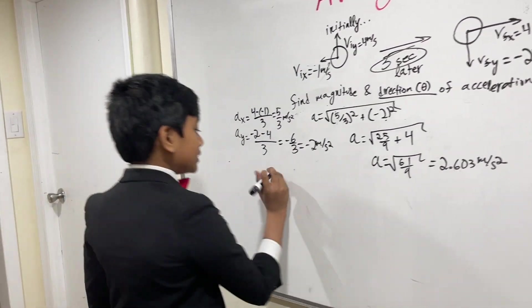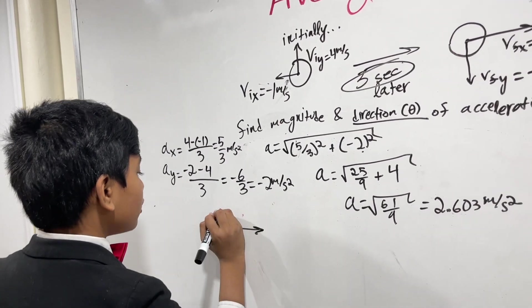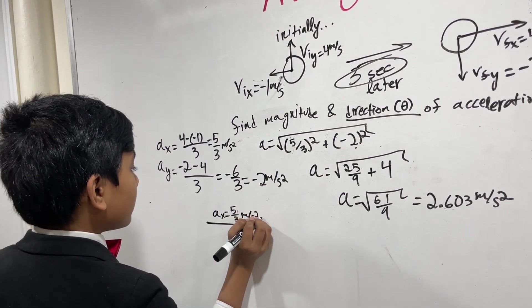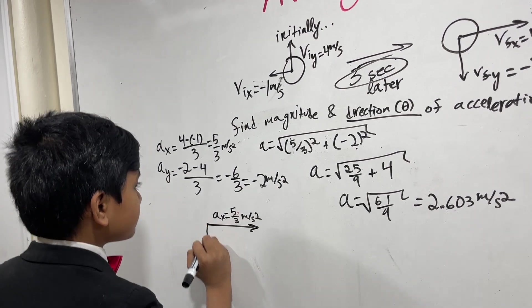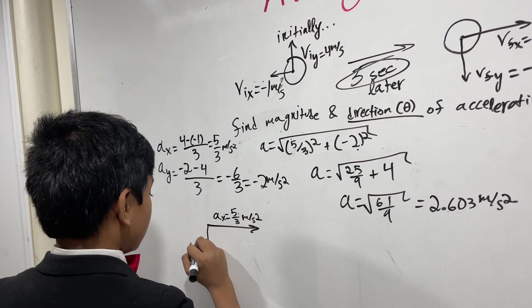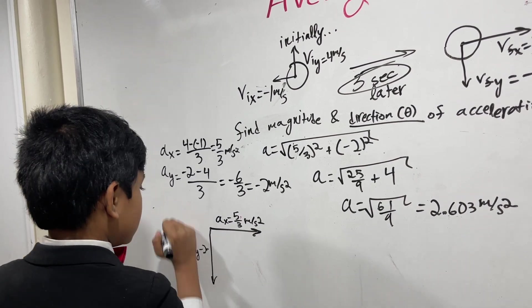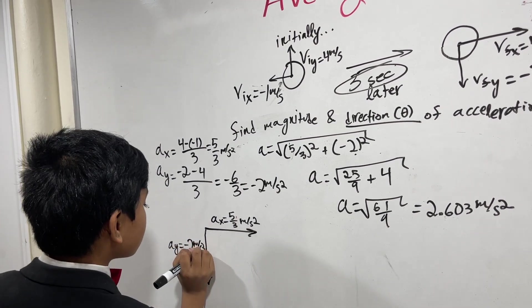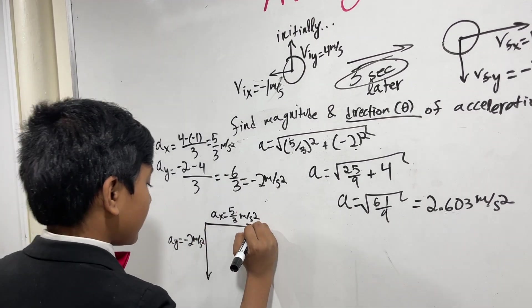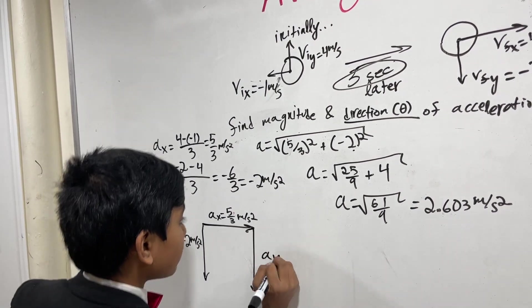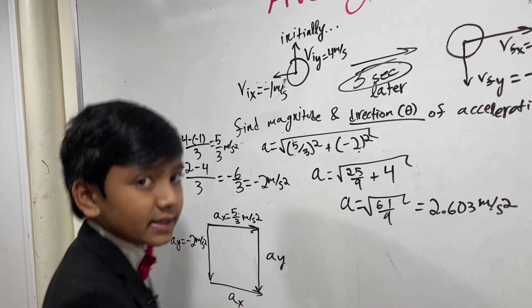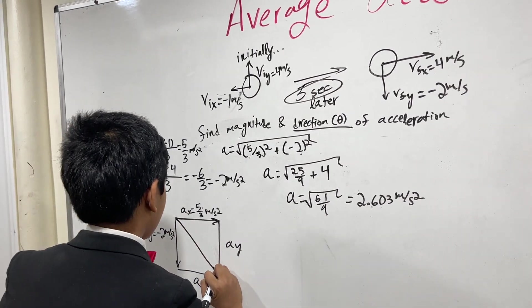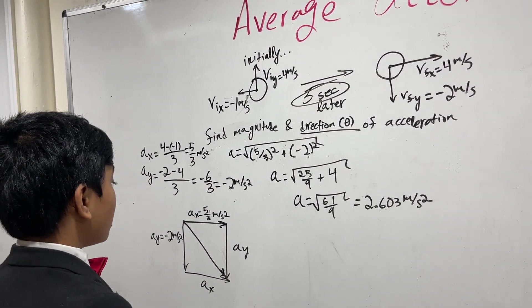So, to visualize, let's draw our Ax, which is 5 thirds. Our Ay, which is minus 2 meters per second squared. Let's just write that a little better. And now, we are going to do the parallelogram method. This is our Ay and this is our Ax. And that means that our resultant will be over here.